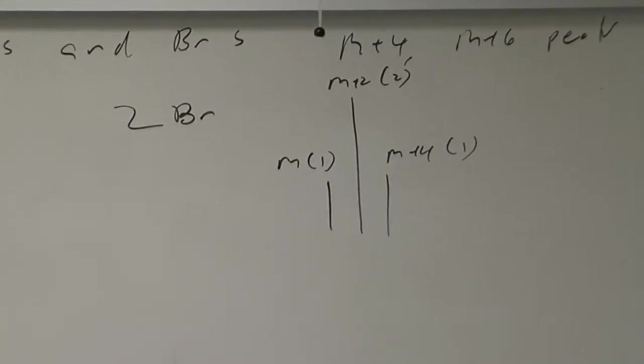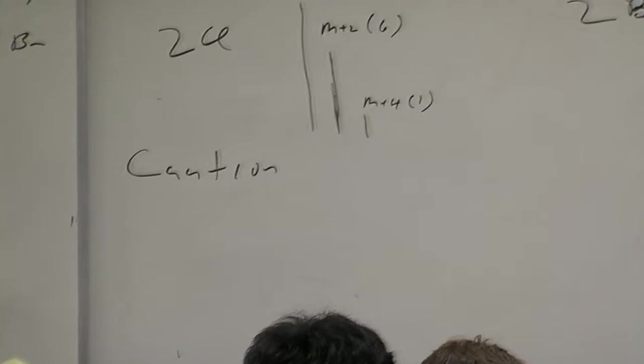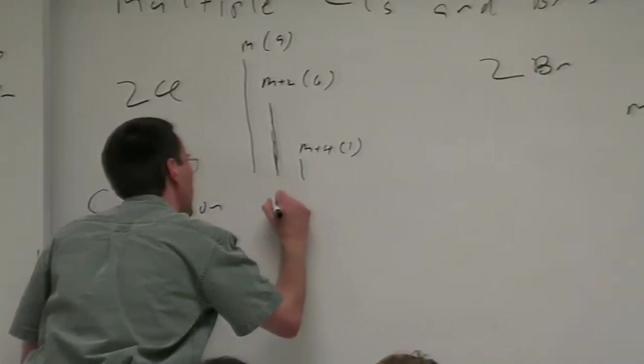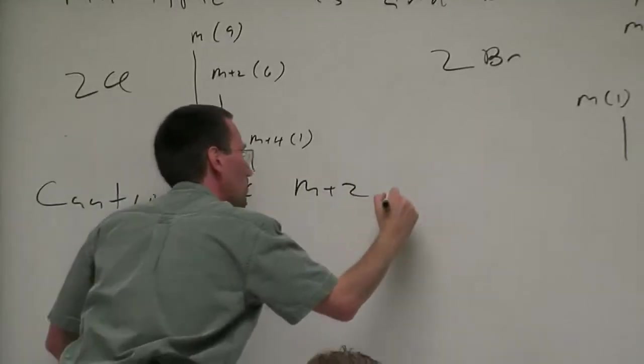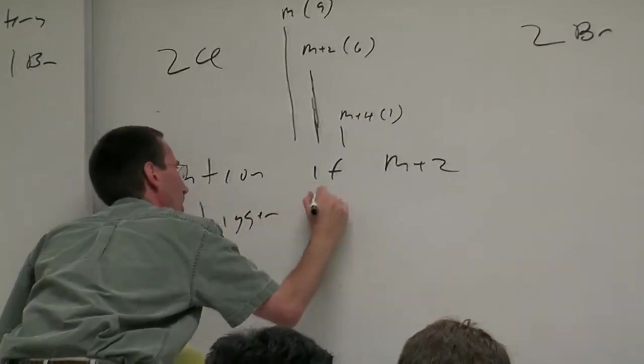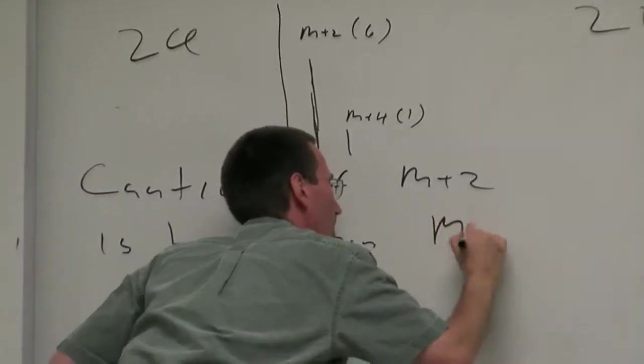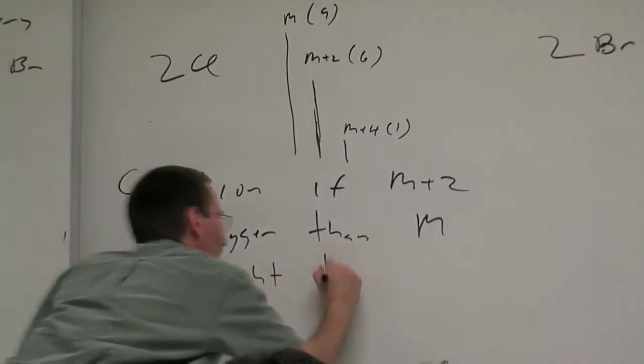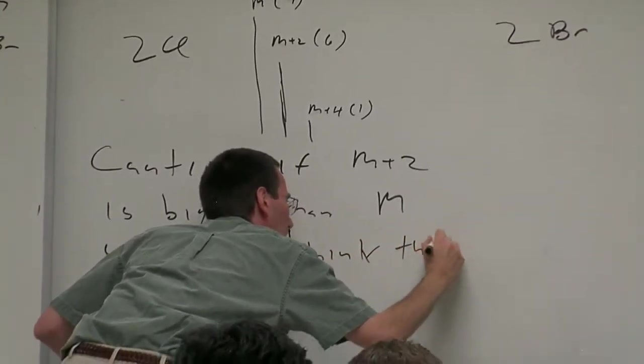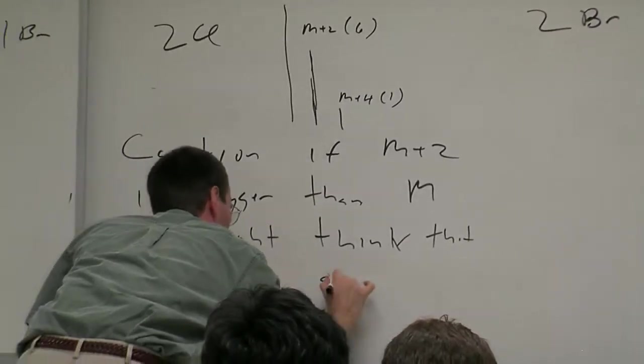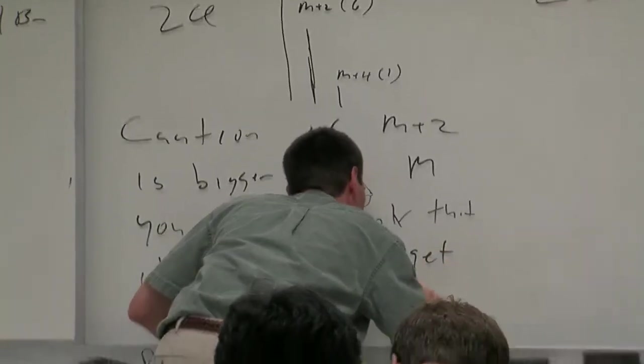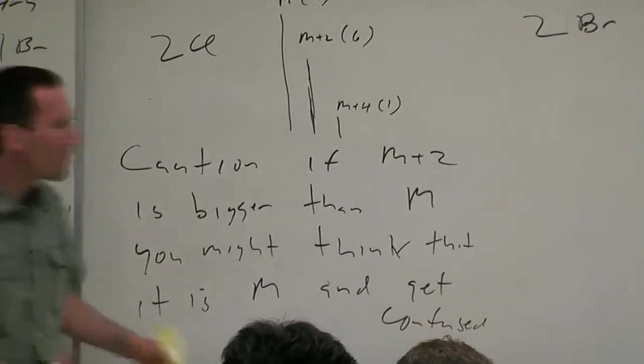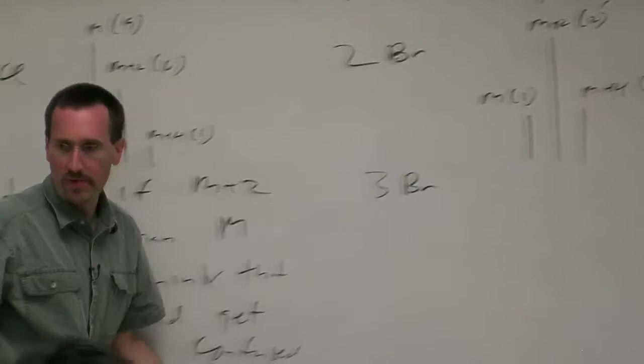There's a caution here. In polyhalogenated compounds, if M plus 2 is bigger than M, you might not even recognize M. You might think it's M and get confused.